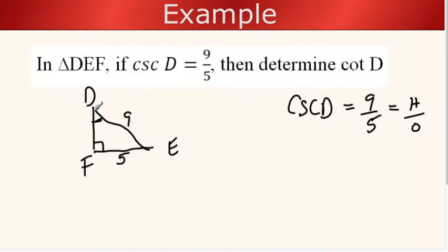Using the Pythagorean theorem, we can find this missing side length, and then we'll be able to do the cotangent of D. The cotangent of D is the adjacent over the opposite, so I would need the adjacent side to write the cotangent of D.